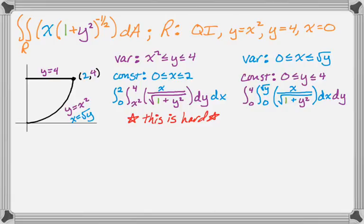This is a very easy integral to do with respect to x, fortunately, because the 1 over √(1 + y²) is just held constant, so it's going to be (1/2)x² times that. So 0 to 4, we're going to integrate with respect to x, so it's (1/2)x² over that. And then x is going to go from 0 to √y, and then finally we'll integrate again with respect to y.